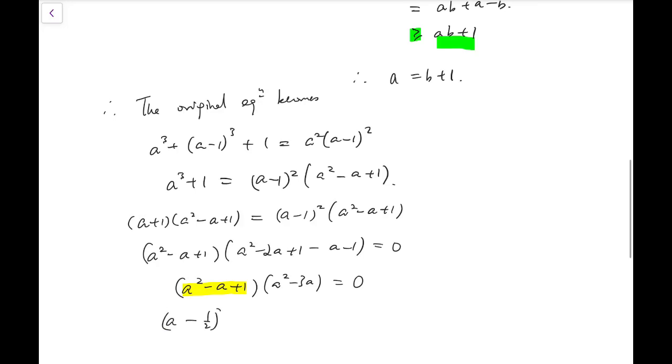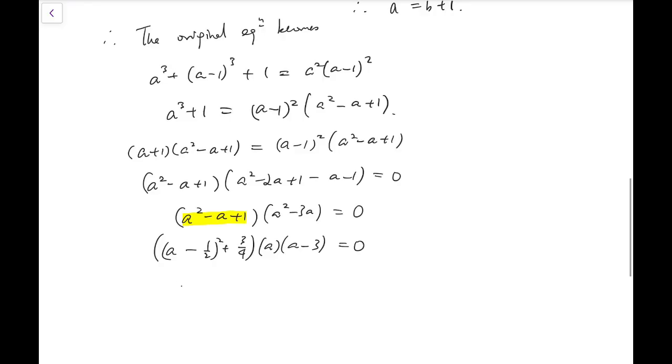So the first part has no real roots because it's actually this by completing a square. So a can only be 0 or 3 and of course a cannot be 0. So a is 3 and therefore b is 2.